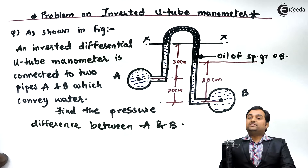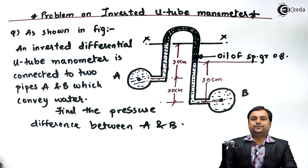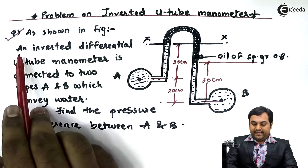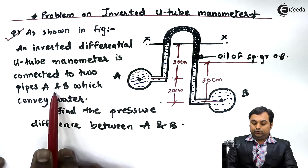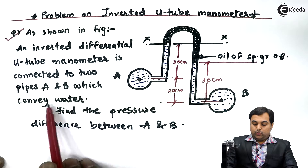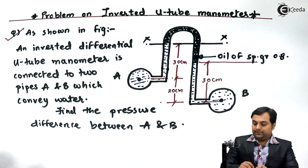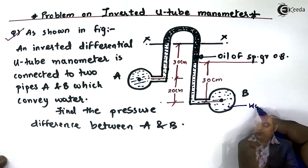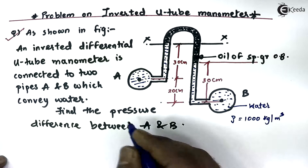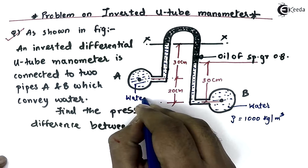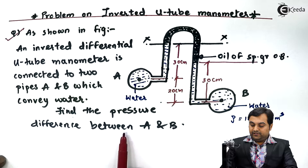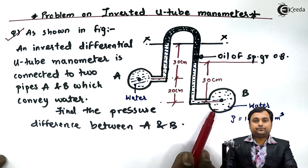In this video we will see a problem on an inverted differential U-tube manometer. As shown in the figure, an inverted differential U-tube manometer is connected to two pipes A and B. Both pipelines convey water, and we have to find the pressure difference between A and B.